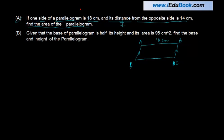Now distance basically refers to if you were to draw a straight line from this side to the other side, from the opposite side. The opposite side is CD. So the opposite side is 14 cm. Find the area of the parallelogram.